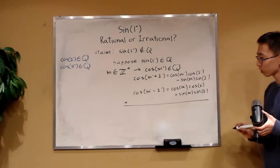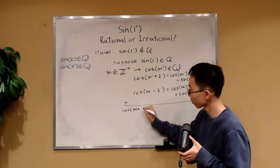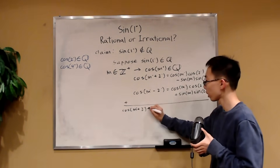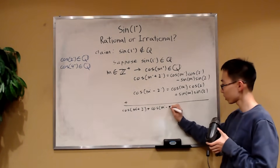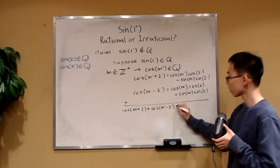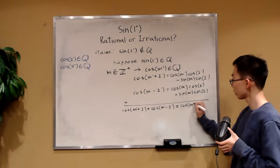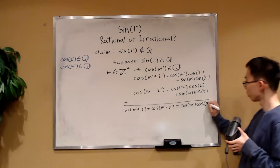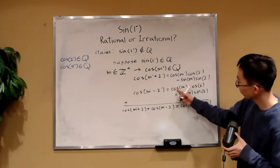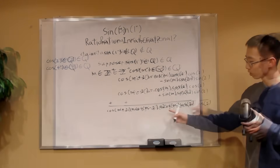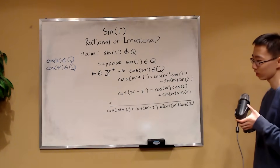If we add the two equations, we get: cosine of m plus 2 degrees plus cosine of m minus 2 degrees equals 2 times cosine of m degrees times cosine of 2 degrees. This is what we get from adding the equations.